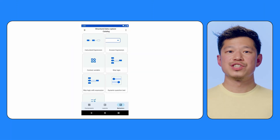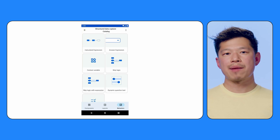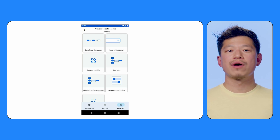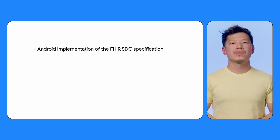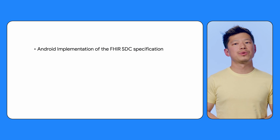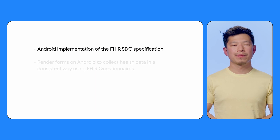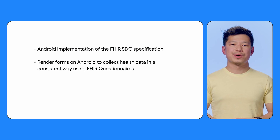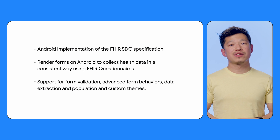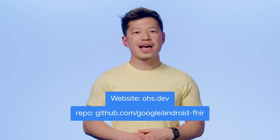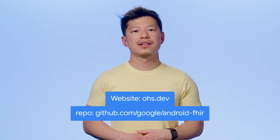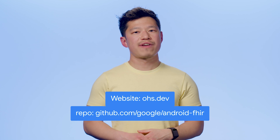To demonstrate the supported features of the SDC library, we have built the Catalog app, which you can build in Android Studio and run on your own Android device. To recap, the SDC library is an Android implementation of the SDC implementation guide, and it helps developers build apps to collect health data in a consistent way. You can render forms on an Android device and collect user input. It also supports form validation, advanced form behavior, data extraction and population, and custom themes. To learn more about the SDC library's features, such as multi-language support and custom widgets, explore our website and the Android FHIR SDK repository. To keep learning about how to build with Open Health Stack, check out the next video in our series. Thank you.